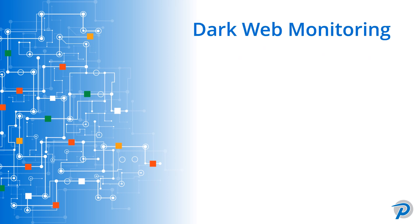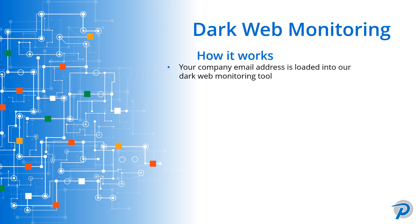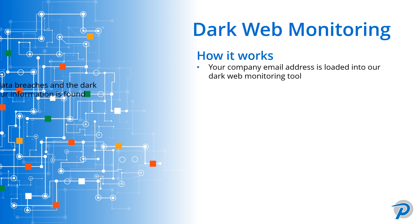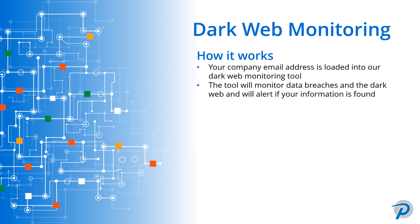Expanding a little bit more on dark web monitoring, let's first talk about how it works. Your company email address gets loaded into our dark web monitoring tool through Breach Secure Now. That tool will then go out and search data breaches across any organization as well as the dark web to see if it finds your email address along with any information associated with it, such as name, address, birth dates, and passwords.